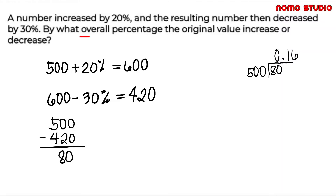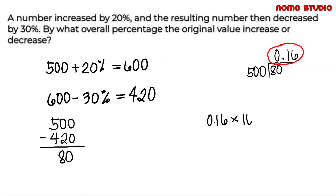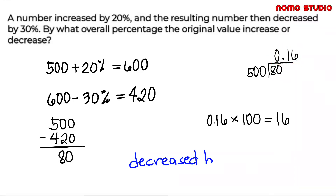Since we are asked for the overall percentage by which the number increased or decreased, to get the percentage, let's multiply 0.16 by 100. 0.16 times 100 is equal to 16. Therefore, the overall percentage by which the original value changed is a decrease of 16%.